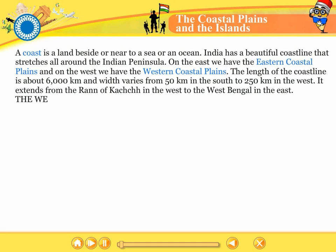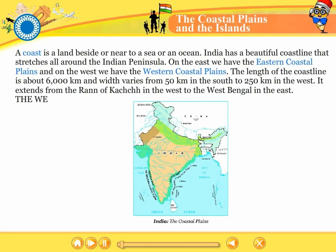The coastal plains and the islands. A coast is a land beside or near to a sea or an ocean. India has a beautiful coastline that stretches all around the Indian peninsula. On the east we have the eastern coastal plains and on the west we have the western coastal plains. The length of the coastline is about 6000 km and width varies from 50 km in the south to 250 km in the west. It extends from the Rann of Kutch in the west to West Bengal in the east.